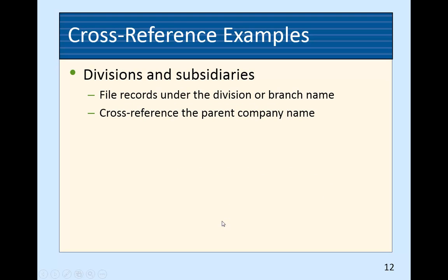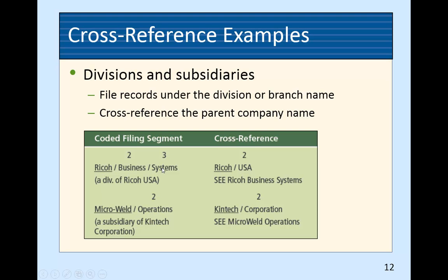For divisions and subsidiaries, file directly under the division or branch name and cross-reference the parent company. Ricoh Business Systems is a division of Ricoh USA — the cross-reference is 'Ricoh USA, see Ricoh Business Systems.' Back to the question about the Gilmore Collection: we deal with the individual restaurants — The Bob, Red Ball Jet, Blue Water Grill — we put the paperwork under each one, and if somebody asks about the Gilmore Collection, the cross-reference says 'Gilmore Collection, see one of these.'